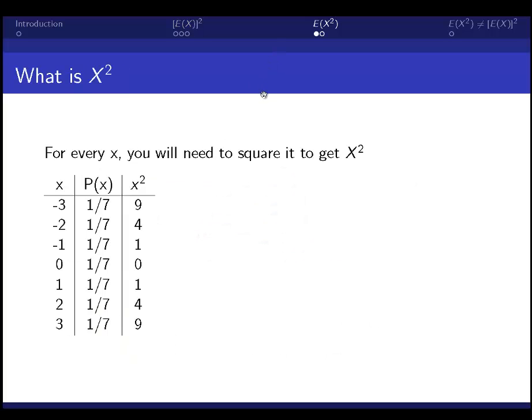Let's move on to finding the expected value of x squared. Well, first of all, what's x squared? We're basically just taking each of these x's and squaring it. So let me add this column to the table. Negative 3 squared is 9. Negative 2 squared is 4. 1 squared is 1, etc.